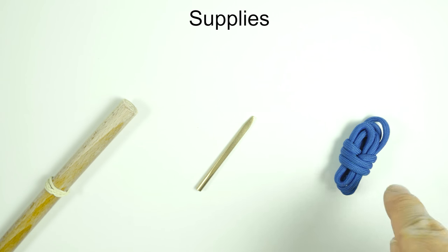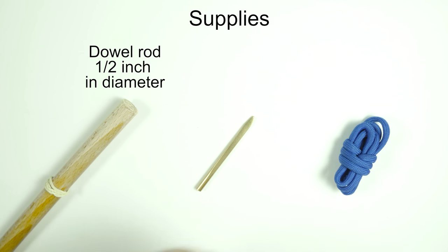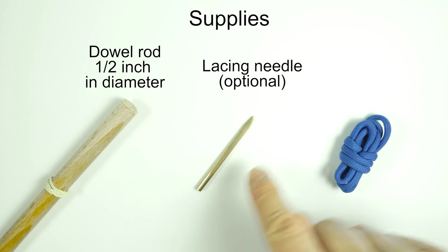The supplies for the small toggle knot are pretty much the same as with any cylindrical turk's head knot. So we have something to tie the knot onto, in my case a half inch dowel rod. You can also use a stick, a pen or anything else. I attached a rubber band onto my dowel rod in order to hold the standing end of my paracord. Secondly, a lacing needle is used in order to make the tying of the knot easier. It is optional, but recommended.